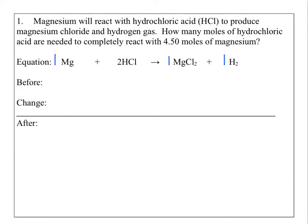Before represents what we have before the reaction starts. Change represents how everything changes in terms of quantity during the reaction. After represents what we have left over after the reaction is complete. Before the reaction starts, we have 4.50 moles of magnesium. We don't know how much hydrochloric acid we have, so we leave that blank or put a question mark. Before any reaction starts, we have 0 moles of product, so we put a 0 underneath each product.